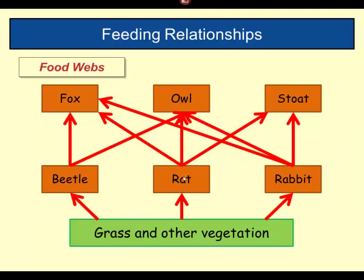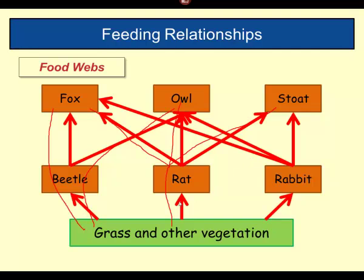Here we've got a food web — you could look at this as a group of food chains bolted together. Grass is eaten by a beetle, eaten by a fox — that represents one simple food chain. But the beetle is also eaten by the owl. The rat eats the grass or vegetation, and could be eaten by the fox, the owl, or the stoat. The rabbit could be eaten again by all three. So the owl would not just eat one animal — it would eat a whole range: beetles, rats, and rabbits.